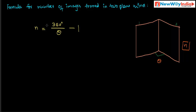This is the formula for the number of images formed in two plane mirrors. Here, theta is the angle of inclination between the two plane mirrors, and n is the number of images formed. 360 is the complete angle. We subtract one because of the loss of one image due to overlapping of two images.